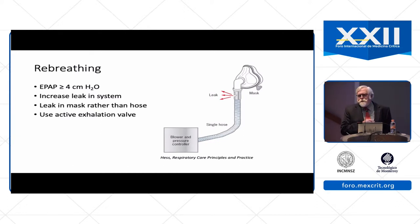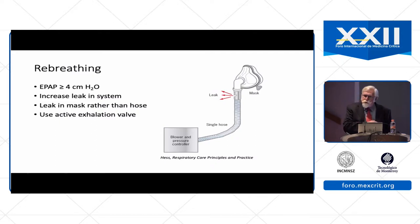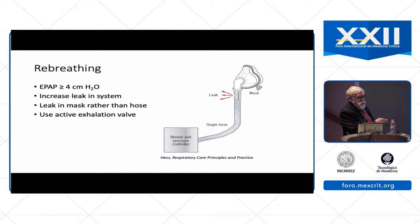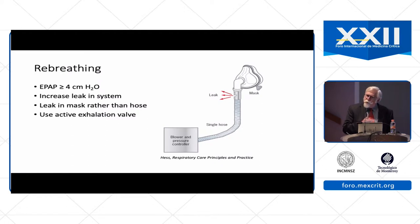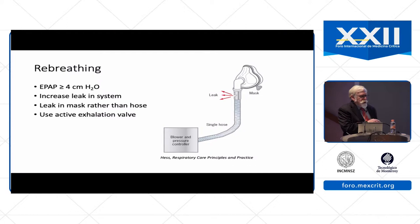One of the issues identified 25 or more years ago with the use of a single limb passive circuit is the potential for re-breathing. If the exhaled breath of the patient exceeds the ability of the leak port to accommodate that exhale, the patient can potentially exhale into the circuit and then re-breathe carbon dioxide on the subsequent inhalation. Certainly, in a patient with hypercapnic respiratory failure, we would prefer that the patient does not re-breathe their exhaled carbon dioxide.